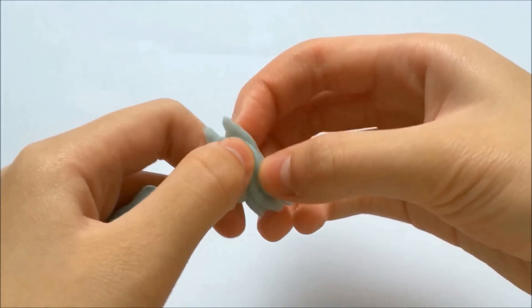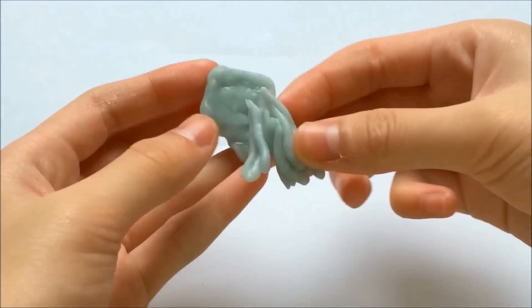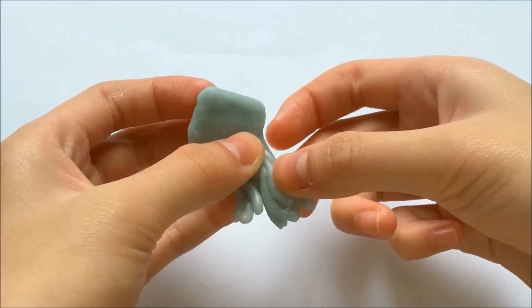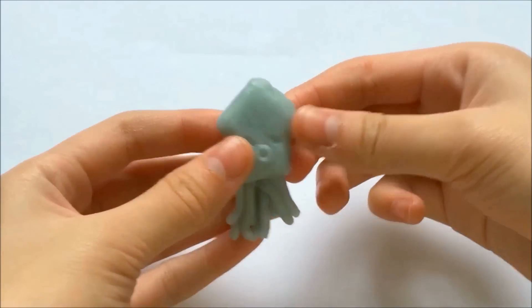Once you have your tentacles, go ahead and stick it onto the back of the squid's head. So it should look something like this.